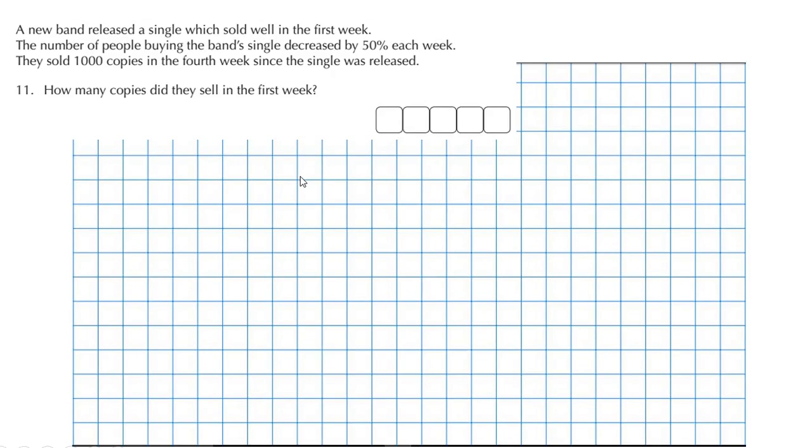Okay, this question looks like quite a difficult question because it's just got so much information in it. Let's have a look at it. A new band released a single which sold well in the first week. The number of people buying the band's single decreased by 50% each week. They sold 1,000 copies in the fourth week since the single was released.